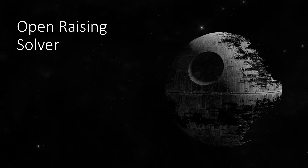For example, if someone's folding too much to open raises, we know it's okay to open raise any two cards — we have an obvious exploit there. But against good opponents it's not going to be so straightforward. They're not going to be folding too much; they're going to be 3-betting at around the right frequencies using the right sizings. We're not really going to have a very clear way of exploiting that player until perhaps later in the hand.